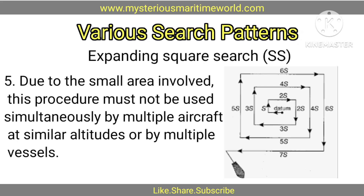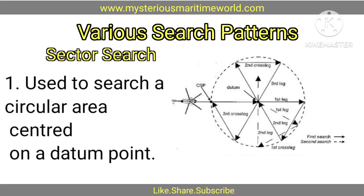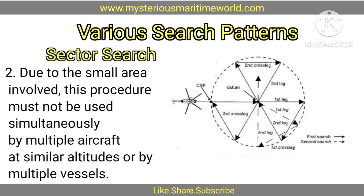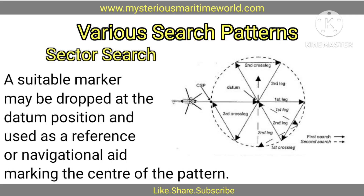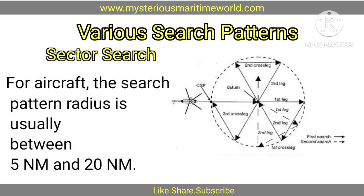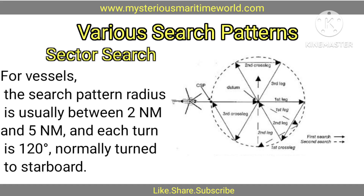Expanding Square Search: Most effective when the location of the search object is known within relatively close limits. The commenced search point is always the datum position. Often appropriate for vessels or small boats to use when searching for persons in the water or other search objects with little or no leeway. Due to the small area involved, this procedure must not be used simultaneously by multiple aircraft at similar altitudes or by multiple vessels. Sector Search: Used to search a circular area centered on a datum point. Due to the small area involved, this procedure must not be used simultaneously by multiple aircraft at similar altitudes or by multiple vessels. An aircraft and a vessel may be used together to perform independent sector searches of the same area. A suitable marker may be dropped at the datum position and used as a reference or navigational aid marking the center of the pattern. For aircraft, the search pattern radius is usually between 5 nautical miles, and each turn is 120 degrees, normally turned to starboard.